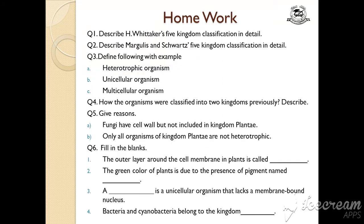Your homework is: describe H.V. Whittaker's five kingdom classification in detail. To do this, make a main heading of Whittaker's classification, then write side headings — for example, an introduction: in which year he gave this classification.